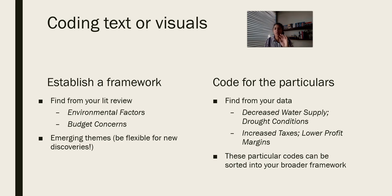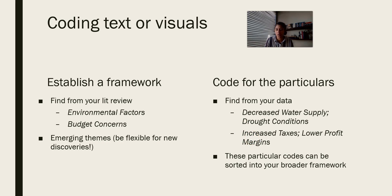Once you have your framework, you go through all your data and text and code for those particular items. If one item in your framework is environmental factors, you look for what environmental factors come up — a decreased water supply or drought conditions, for example. Similarly, with budget concerns, maybe everyone you talked to mentioned increased taxes or lower profit margins. You always want to go from this broad framework to specifically how it's playing out in your data.